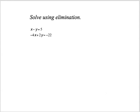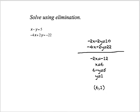I can also solve algebraically using elimination. To do that, I multiply the first equation by 2, and it becomes -2x - 2y = 10. Combining that with the second equation gives me -2x = -12, so x = 6. Plugging that into my original equation, 6 - y = 5, and y = 1.